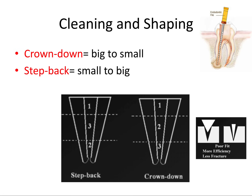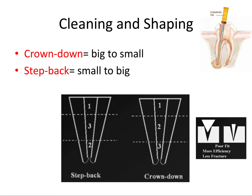Your goal for a root canal is to shape, clean, and obturate each canal to zero to two millimeters from the apex. The proper length from a coronal reference point — like a cusp tip or incisal edge — to this point is called the working length. Creating this endpoint approximately one millimeter from the apex is called the apical stop, and it helps confine instruments, materials, and chemicals to the canal space.